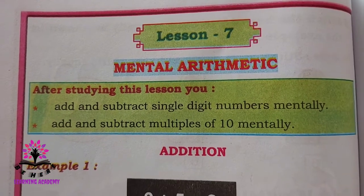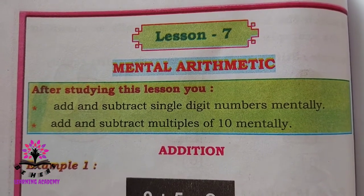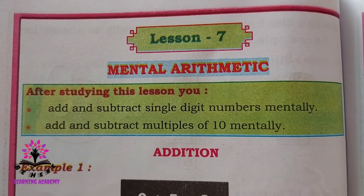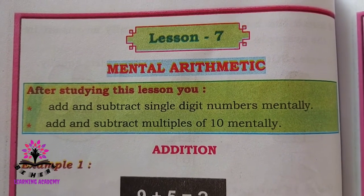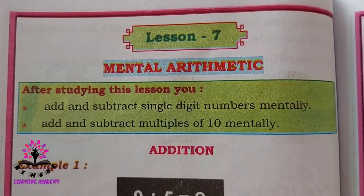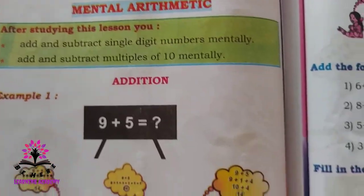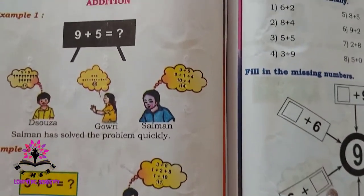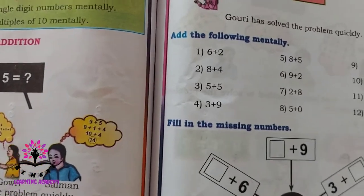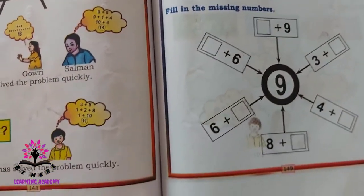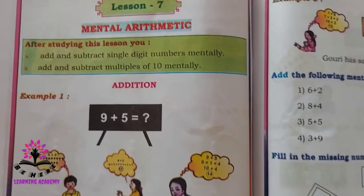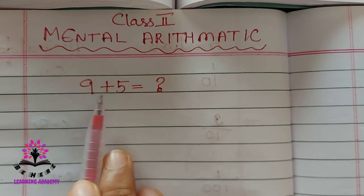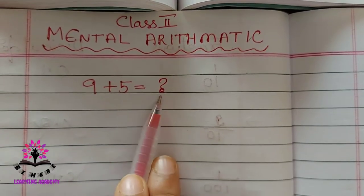Hello students. In today's class we are going to study a new chapter: mental arithmetic, lesson number seven from your class two mathematics textbook. In this lesson you are going to learn to add and subtract single digit numbers mentally, and add and subtract multiples of 10 mentally. Let us begin.